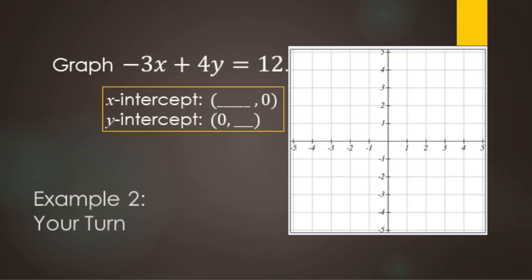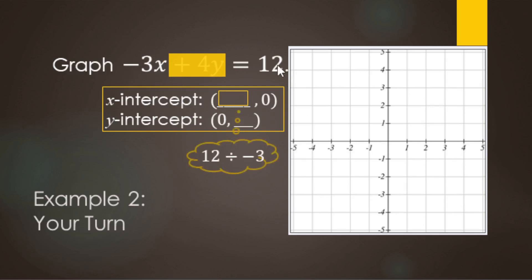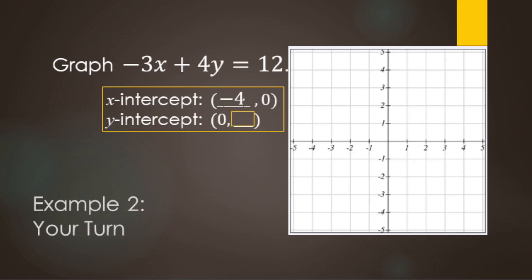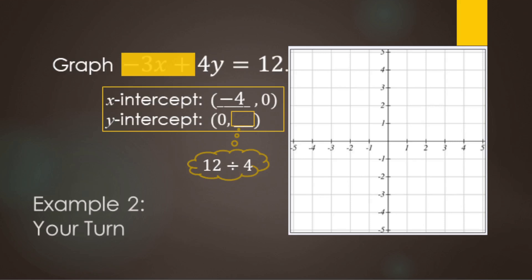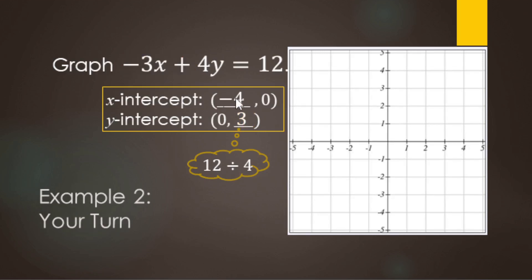Go ahead and try this one on your own — pause the video, then come back and see how you did. For the X-intercept, put 0 in for Y: 4 times 0 is 0, so we're left with negative 3X equals 12. Divide by negative 3 to get X equals negative 4. For the Y-intercept, put 0 in for X: negative 3 times 0 is 0, leaving 4Y equals 12. Divide by 4 to get Y equals 3. Plot the X-intercept at negative 4 and the Y-intercept at 3, draw the line.